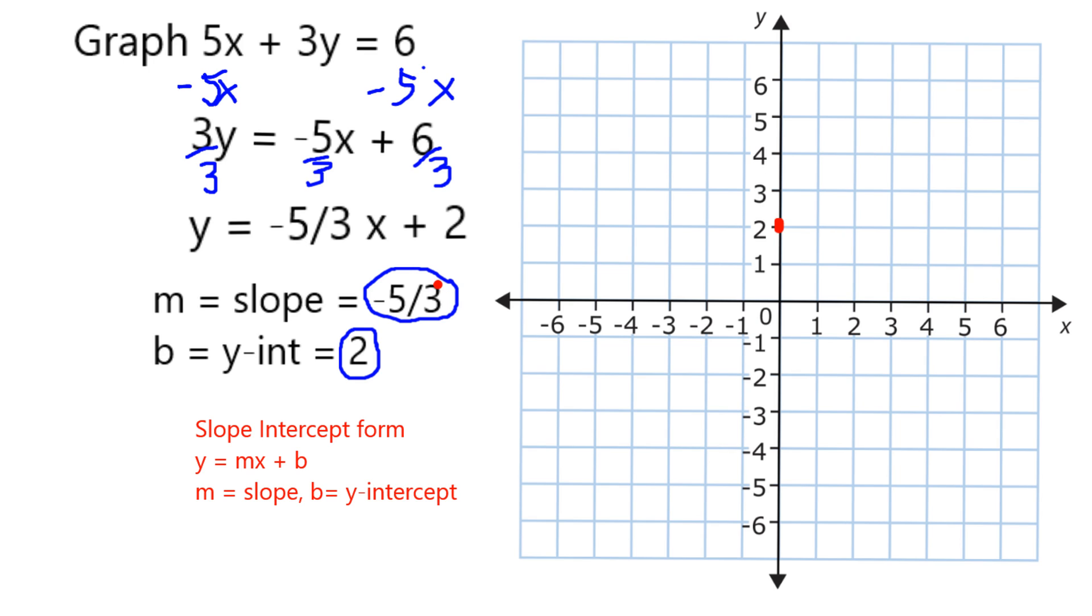From there, I'm going to follow my slope. Remember, slope is rise over run. So in this case, I have a rise of negative 5 and a run of 3, which means I go down 5 and over 3 to get to my next point on the graph.